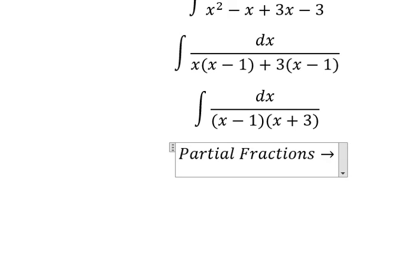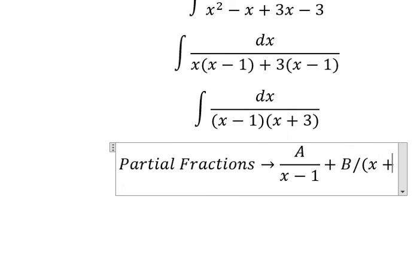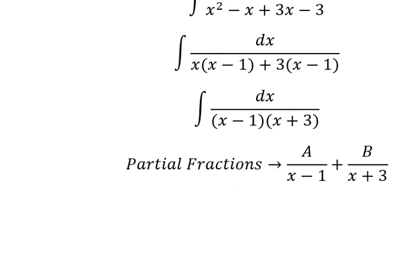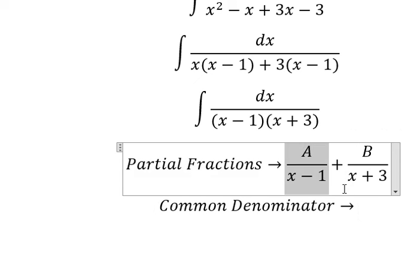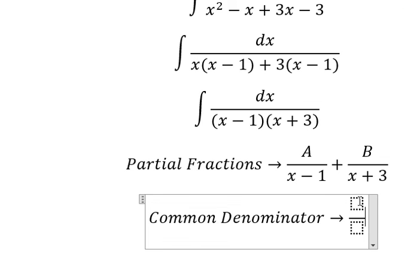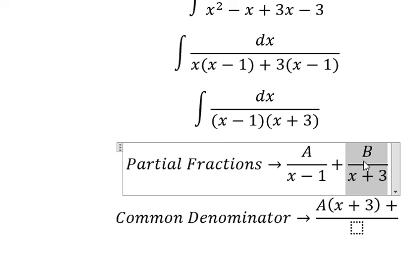So I will put capital A over x minus 1 and capital B over x plus 3. Later we do common denominator. So this one is missing x plus 3. This one is missing x minus 1.